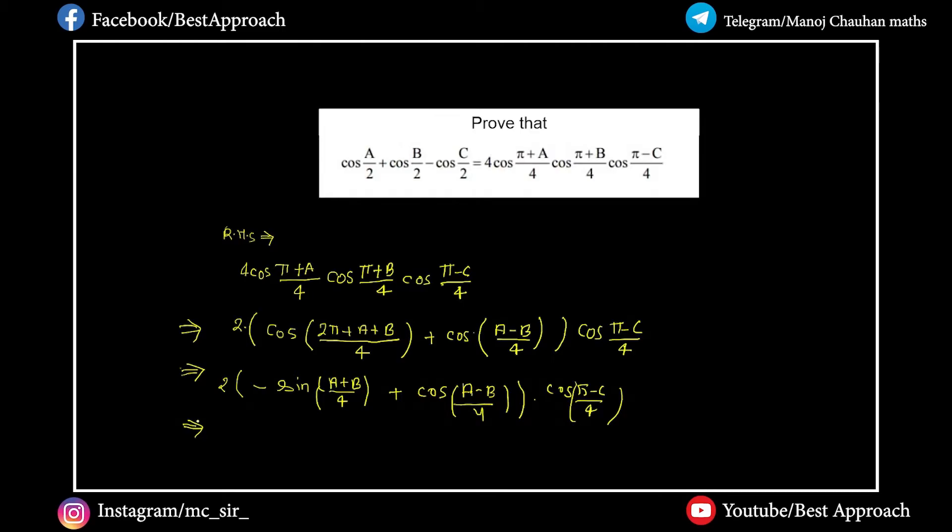Now we multiply this by cos of pi minus c divided by 4, plus cos of a minus b divided by 4, plus cos of a plus b divided by 4.